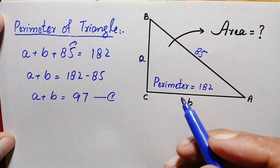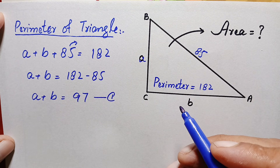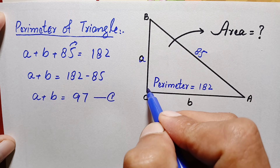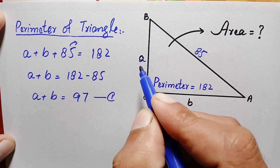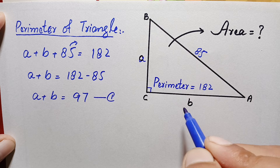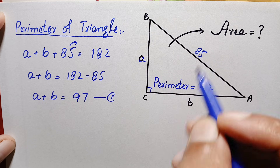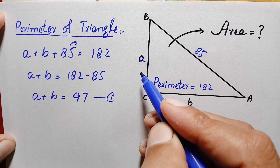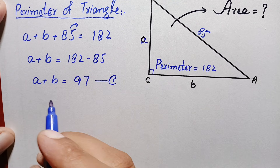Looking at this figure, this is a right angle triangle, so we can apply the Pythagorean theorem to sides a and b — the base and the height. By the Pythagorean theorem, hypotenuse squared equals perpendicular squared plus base squared.